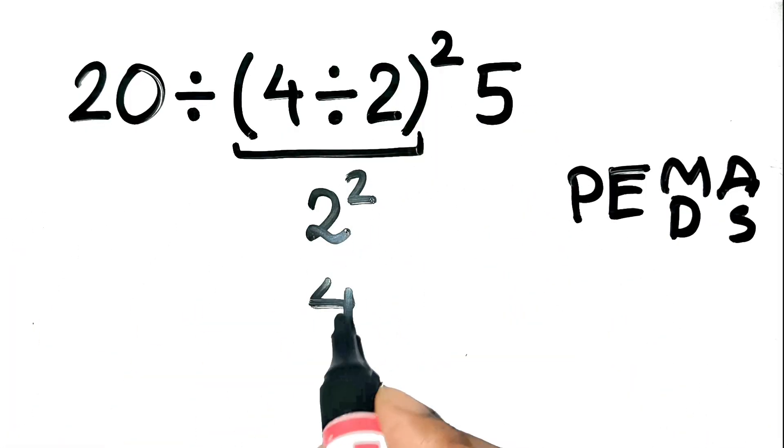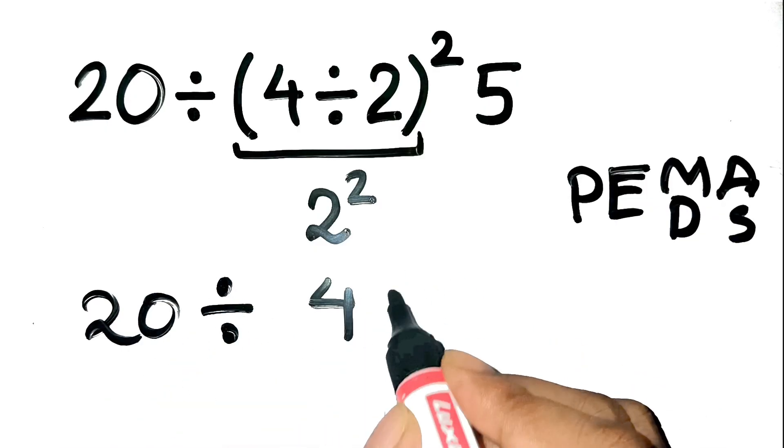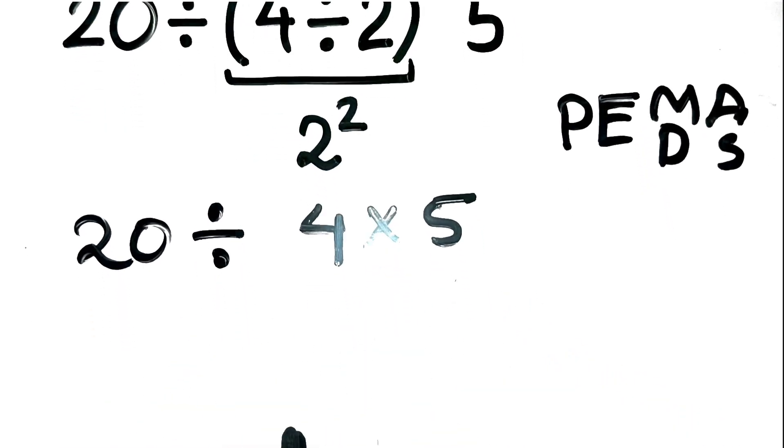the whole thing becomes 20 divided by 4 times 5. Now here's where everyone slips up.